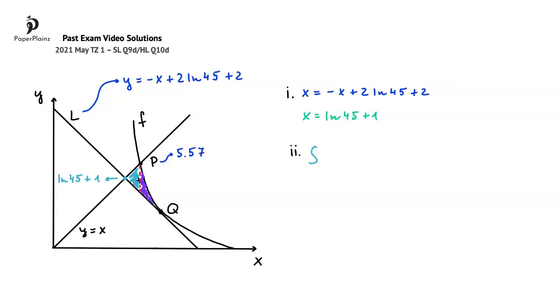Typing ln 45 plus 1 into our calculator and pressing enter, we get that it is equal to approximately 4.81. Now we could write ln 45 plus 1 as a lower limit of our integral, but it is a bit too long, so here I will simply use 4.81. The upper limit, as we said, is 5.57.